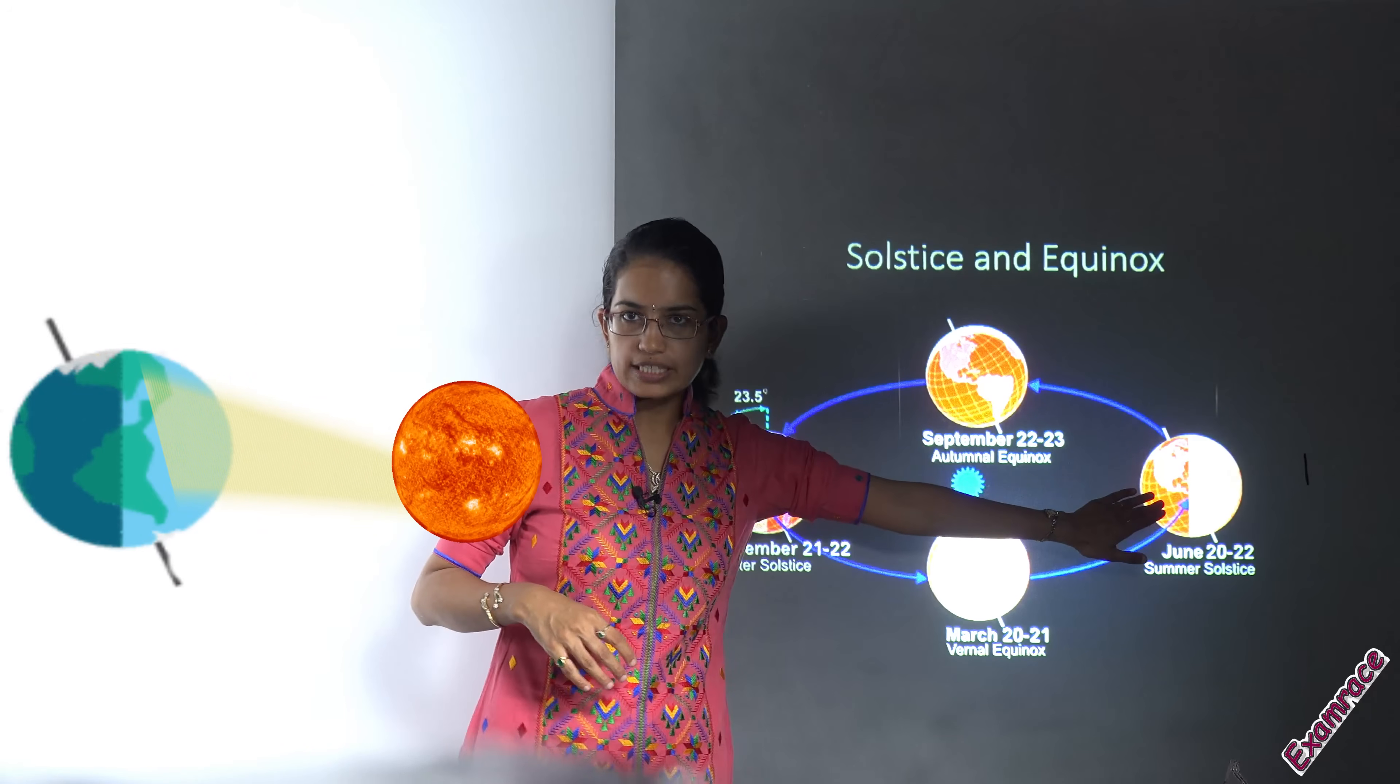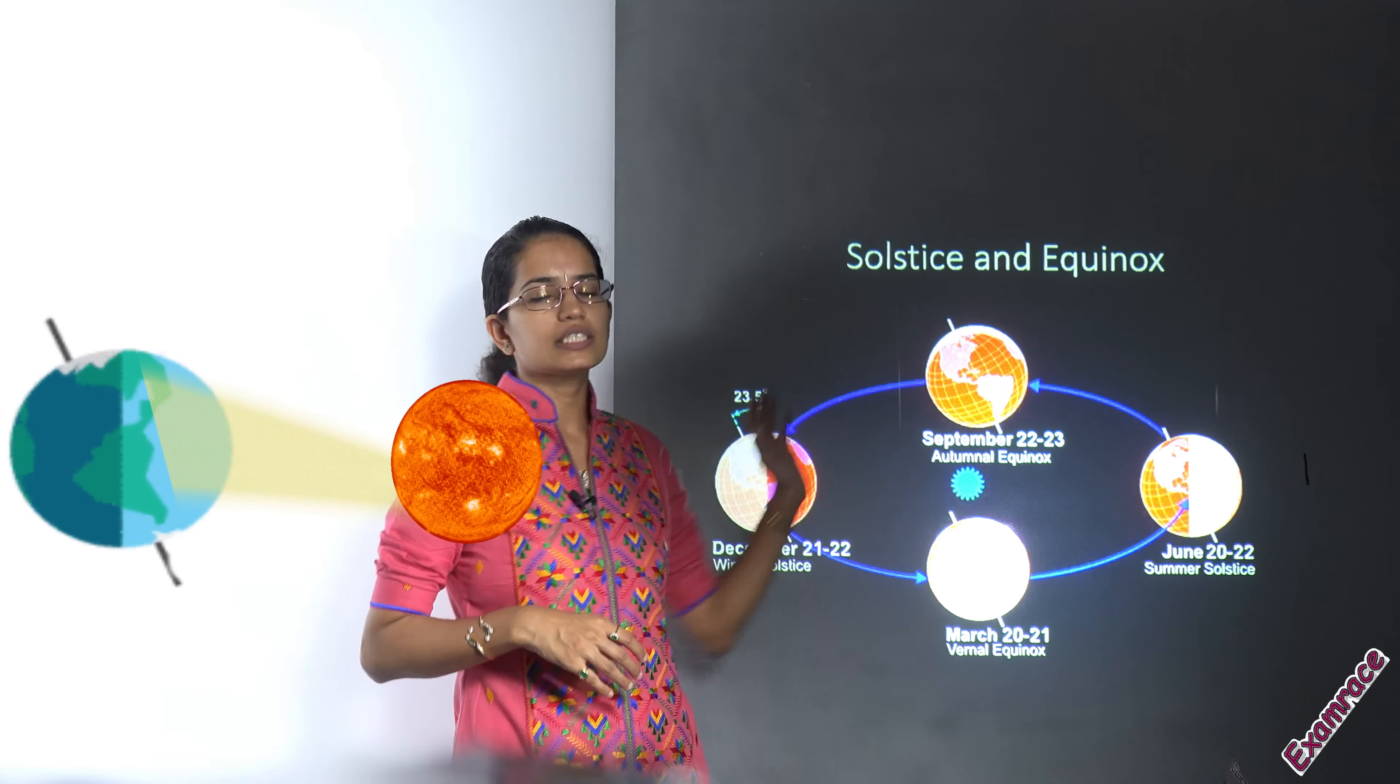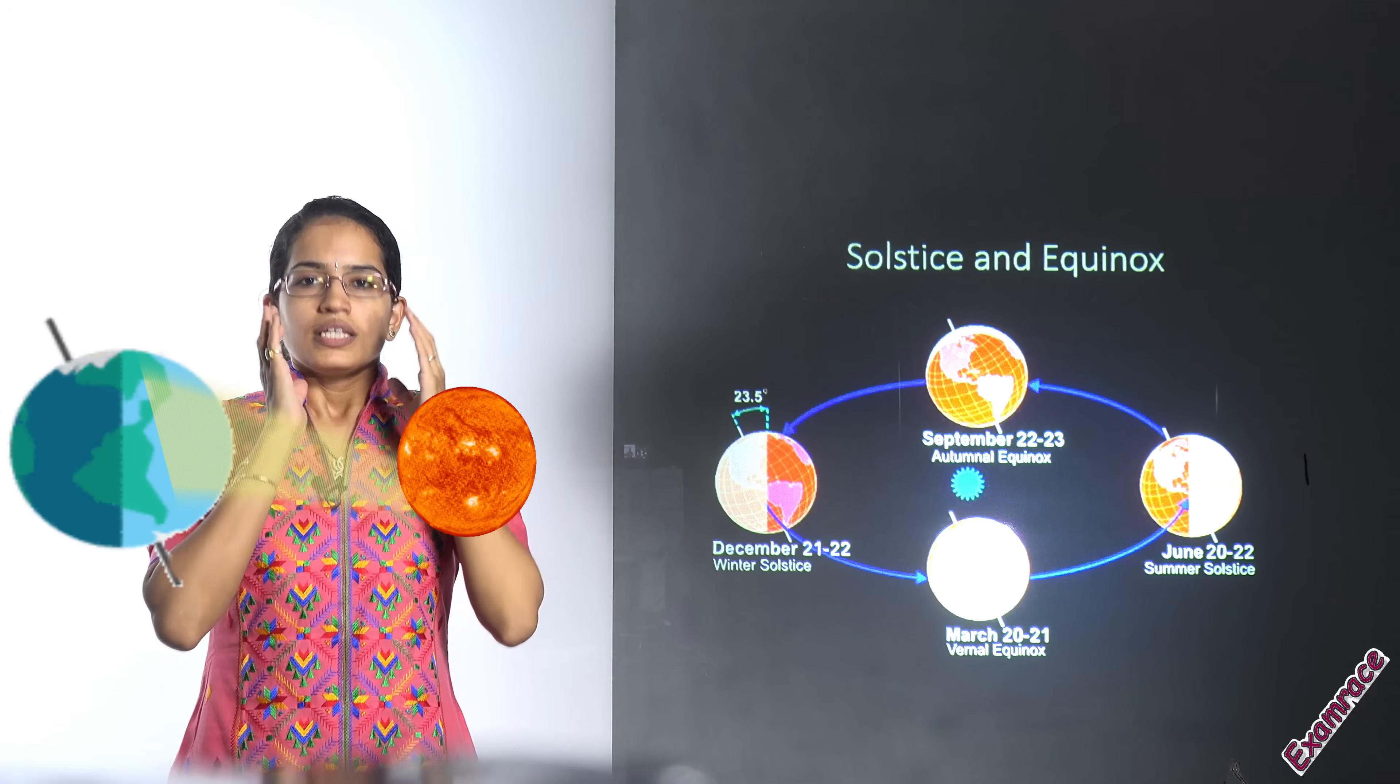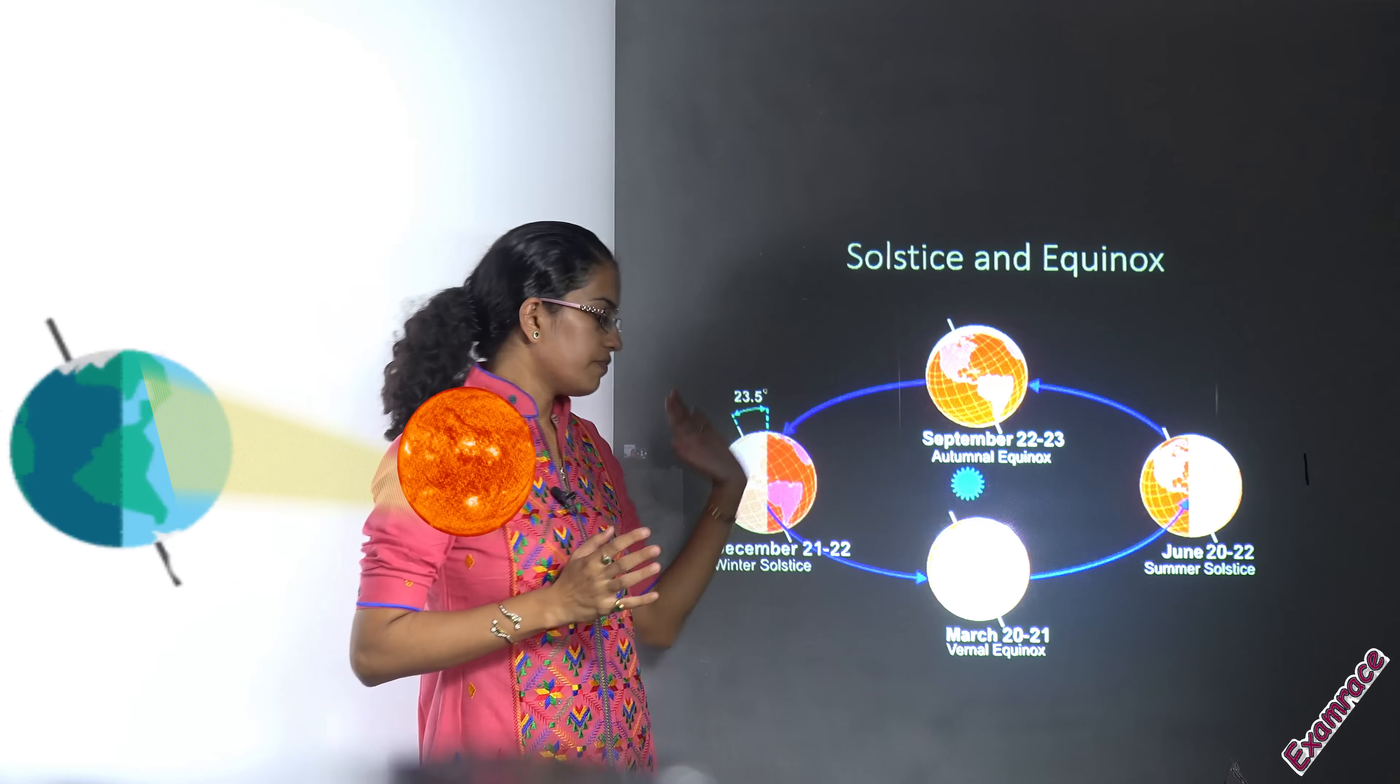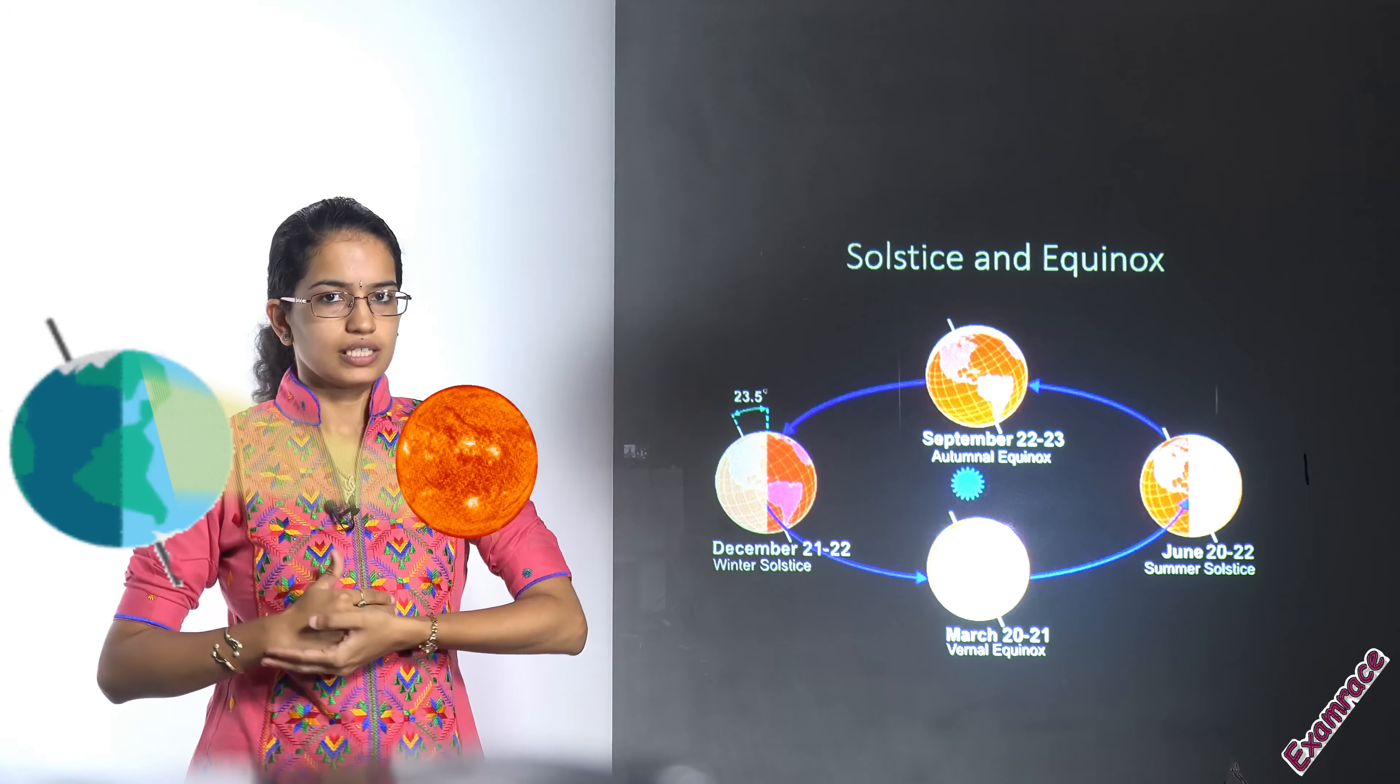So here you have the longest days, here you have the longest nights, and that's to understand the concept of solstice. That's the summer solstice and the winter solstice in the Northern Hemisphere. The reverse would happen in the Southern Hemisphere.